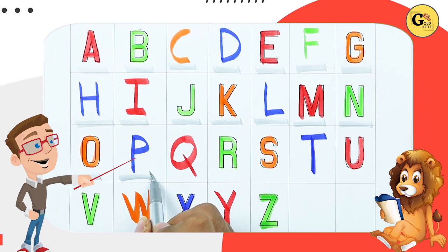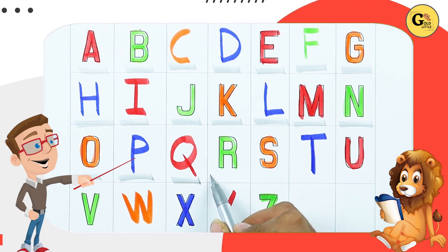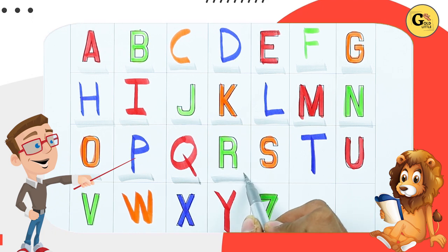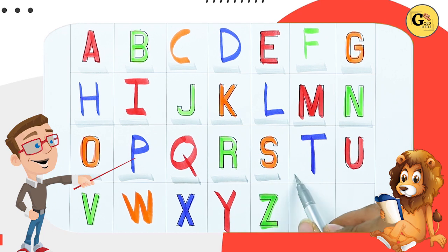P. P for parrot. Q. Q for queen. R. R for rabbit. S. S for sheep.